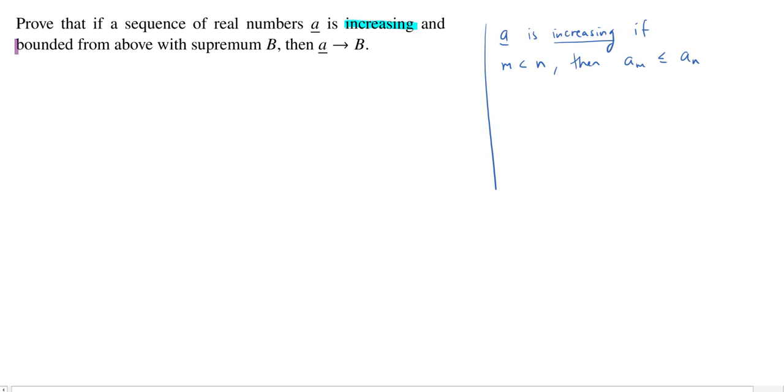Next we have bounded from above. A is bounded from above, which means what it sounds like: you can't get above some point. If there exists some b such that a_n is less than or equal to b for all n,